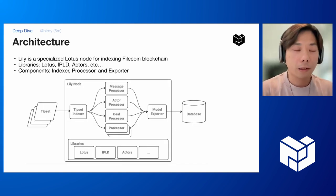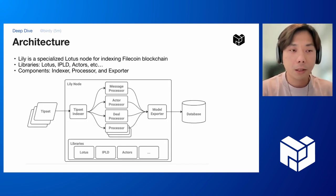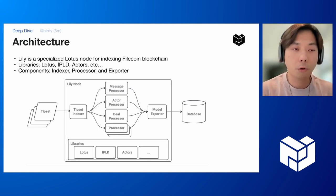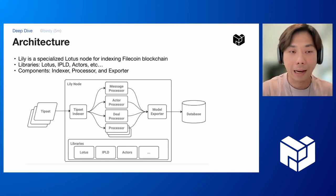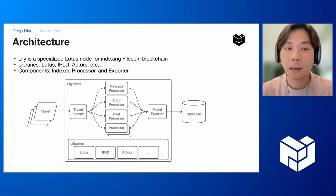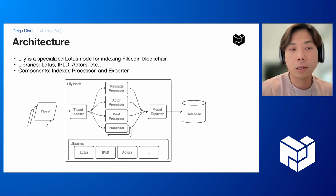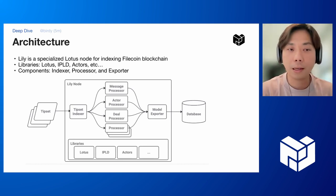Here's the diagram of Lili's architecture. Lili is a specialized Lotus node — it imports libraries from Lotus, IPLD, and Actors, etc. The main components are the indexer, processors, and the exporter.